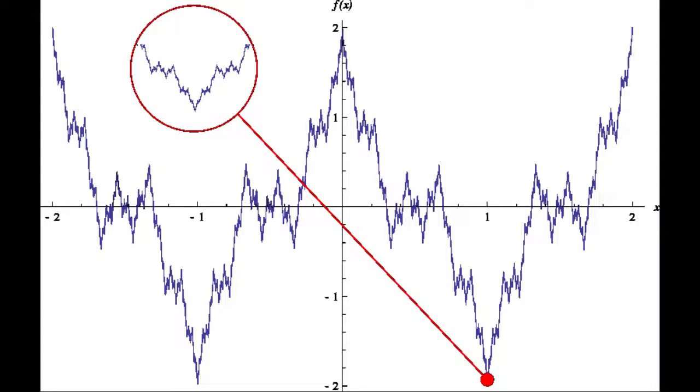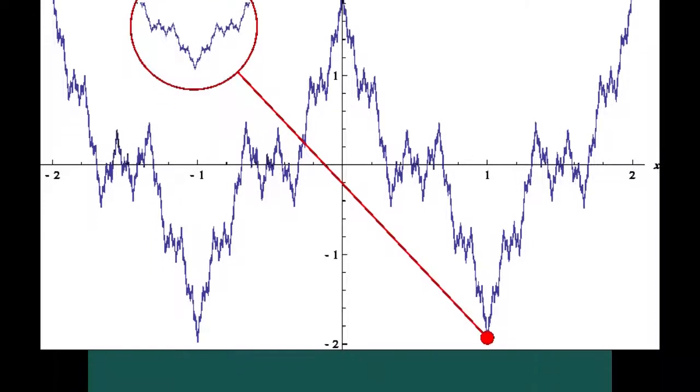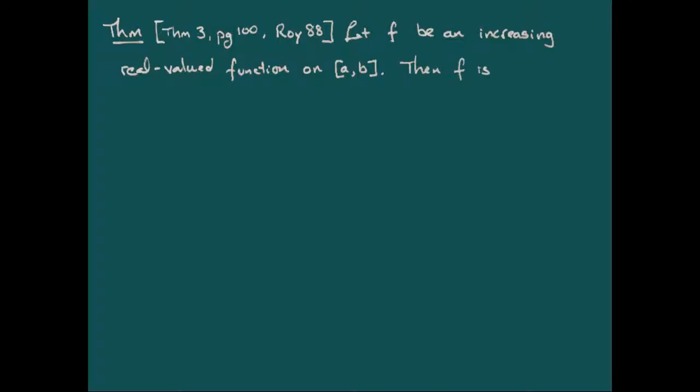But the proof that it's going to be not of bounded variation takes a little bit more machinery than we have necessarily at this point, but here's a short way to see it. And this is actually a theorem from Royden's 1988 book, Real Analysis. The reference will be at the end of the video, where if we let f be an increasing real-valued function on a closed interval a, b, then f is differentiable almost everywhere. Now what we mean by almost everywhere, this is a statement involving measure theory, so almost everywhere means the set of points where it's not differentiable has measure zero.